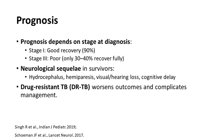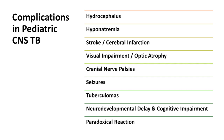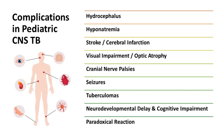Drug-resistant TB worsens the outcome and complicates management. The most common complications in pediatric CNS TB are hydrocephalus and hyponatremia. Keep in mind that CNS TB is an evolving disease — even after starting drugs, it will be two to three months before therapy takes full effect, and by that time TB may still be evolving. Complications including hydrocephalus, hyponatremia, stroke, optic nerve atrophy, and cranial nerve palsies may occur, as well as seizures, tuberculomas, and paradoxical reactions.